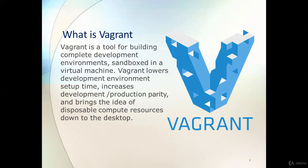Basically, Vagrant helps us to define infrastructure as code. For example, if I need two virtual machines with 5 GB of RAM and two core CPUs, we can write this code in the Vagrantfile and after that Vagrant can do the job — creating machines without any human intervention.